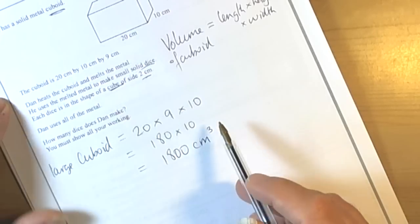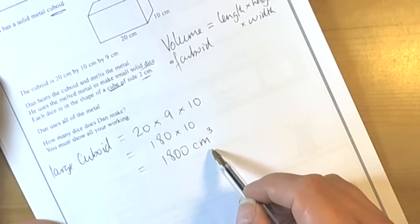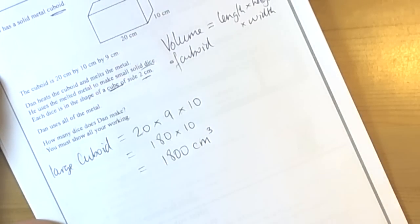Really important you put down the units because in the exam you get marks for correct units if they're missing from the answer line, as in this question.